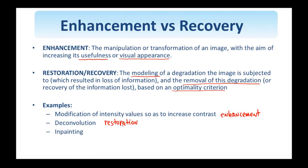The third example is in-painting. The degradation in this case removes the intensity values of pixels in a part of the image, and the objective is to estimate these missing values. If this estimation is done without determining an optimality criterion — just doing an operation that simply makes sense — then we have an enhancement problem. If, on the other hand, the in-painting procedure depends on an optimality criterion, then we have a recovery problem. In this class, we'll talk about in-painting as a recovery problem.